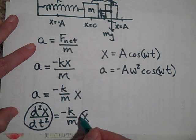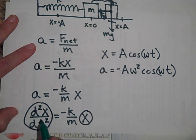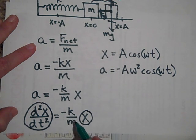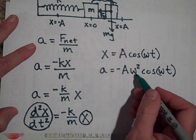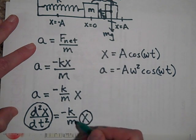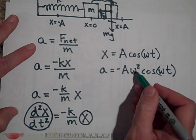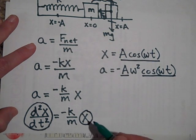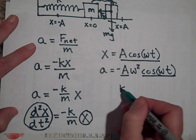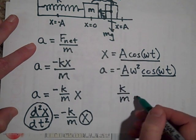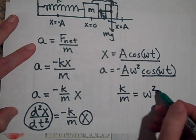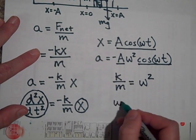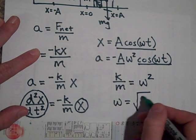Then this is a, and this is x. And what separates them is a negative sign and then k over m. So that means that k over m, if you look, this k over m must be omega squared, because this is the same as that. So k over m must equal omega squared. In fact, I'm going to tell you that omega is equal to the square root of k over m.